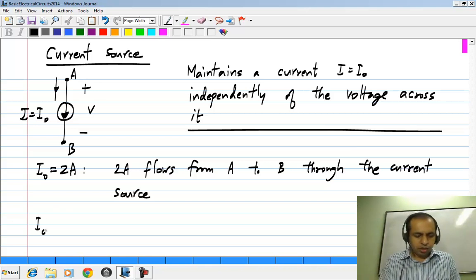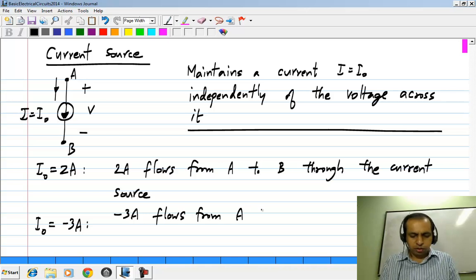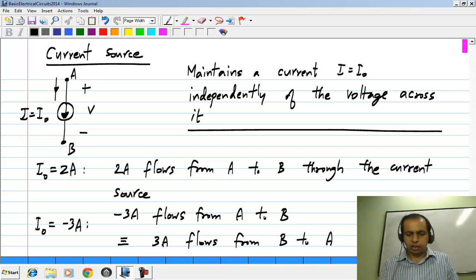If I naught is minus 3 amperes, it means minus 3 amperes flows from A to B, because the arrow inside is drawn from A to B in this case, which is the same as saying 3 amperes flows from B to A.